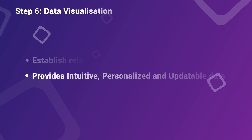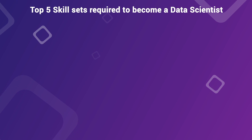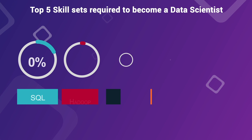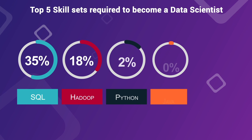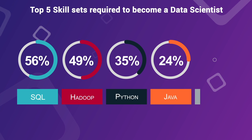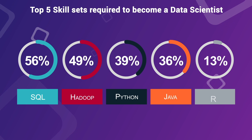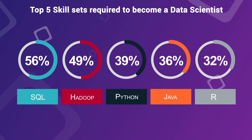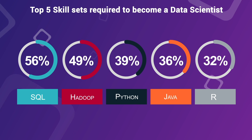Now let's cover the top five skill sets required to become a data scientist. SQL tops the chart, followed by Hadoop and Python. R is catching up too. Knowledge of these tools helps a data scientist derive useful insights.